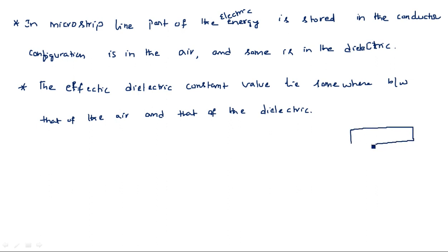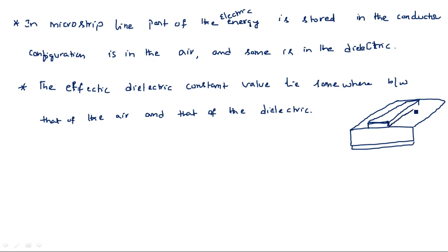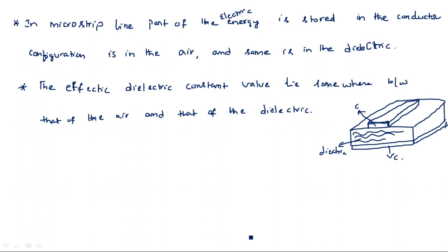If you take the structure of a microstrip line, at the bottom we have a conductor and again on top we have a conductor — this is the conducting layer with thickness t. Part of the electric energy is stored in this conductor and the remaining part is stored in this dielectric material.